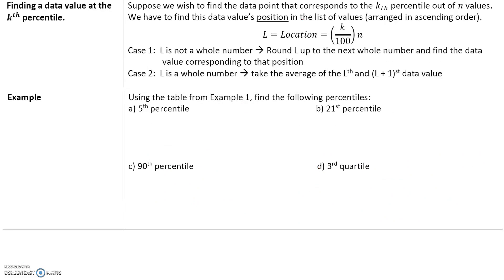Now let's go the other way — what if you wanted to find the data value at the kth percentile? Suppose we wish to find the data point corresponding to the kth percentile out of n values. We find its location L in the list arranged in ascending order, where L equals k divided by 100 times n. There are two cases: if L is not a whole number, round L up to the next whole number and find the data value at that position. If L is a whole number, take the average of the Lth and L plus 1st data values.